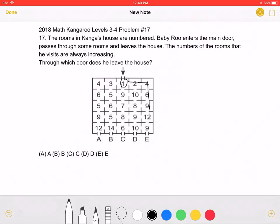Oh no, now we realize that after the 12, we would have to go to the 9 again. And we can't do that because 12 is greater than 9. In the problem, it's stated that the number of rooms he visits are always increasing. So we know that is not the correct way.